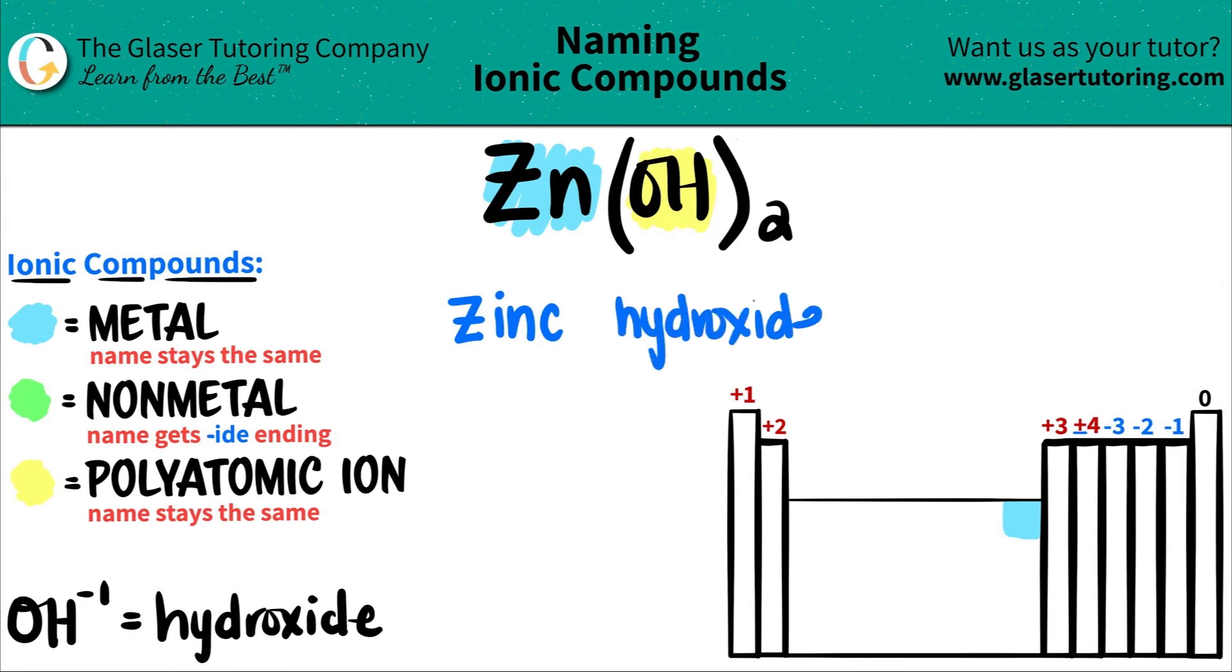Okay. Now here's the question. All ionic compounds, if the ones that have a metal in it, do they need a Roman numeral or do they not? Well, it depends on what the metal is.